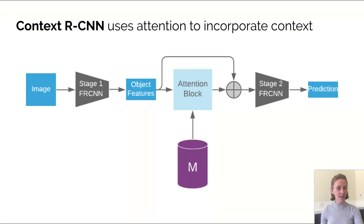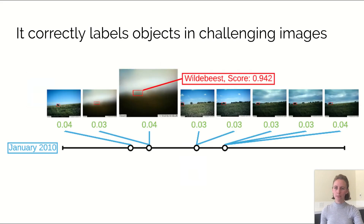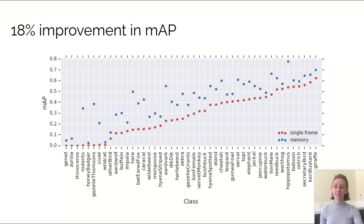Context R-CNN uses attention to incorporate that same context and can leverage context from up to a month of data. It correctly labels objects in challenging images, such as the wildebeest we saw before. We see an 18% improvement in mean average precision.